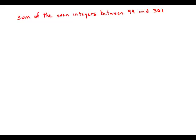For any positive integer n, the sum of the first n positive integers equals n times n plus 1 over 2. What is the sum of all the even integers between 99 and 301?